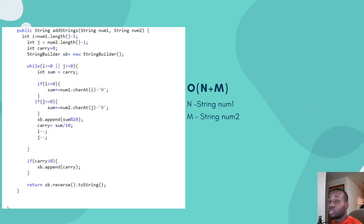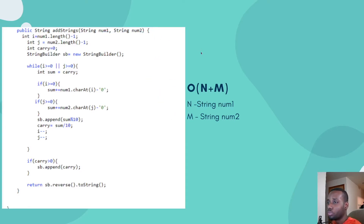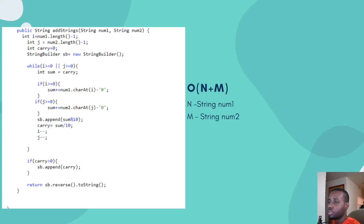Next is O(n + m). This is a very interesting case. When you have two inputs, you need to account for both of them separately since they're not the same size. We use n for the first input and m for the second. Because we're looping through both strings, we need to account for both — hence O(n + m). You can't just say O(n) because it's ambiguous — which input does it represent? Make sure you account for both.